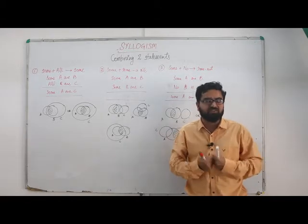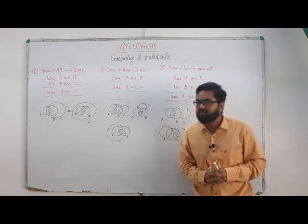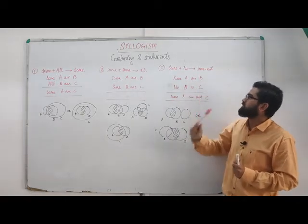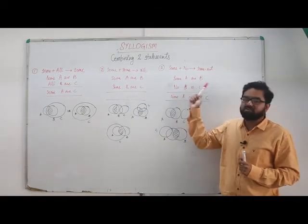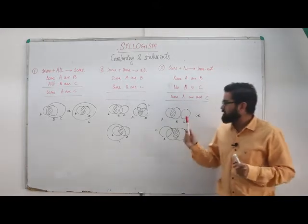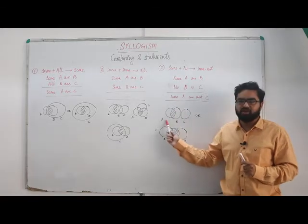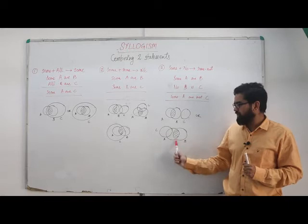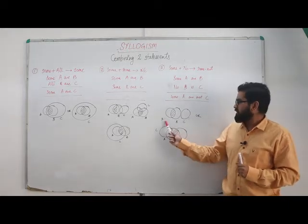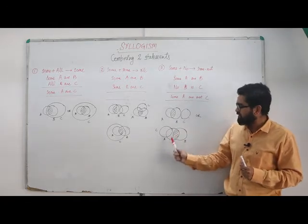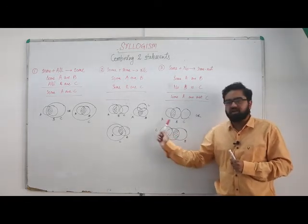Coming to the third rule, sum plus no. Here we have 'some A are B' and 'no B is C'. This can be represented in two ways. The relationship between A and C: here no A is C, here we can say some A are C or some A are not C, both are possible.